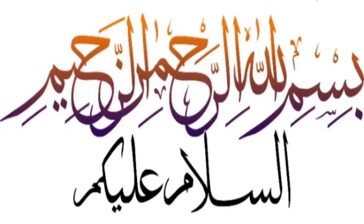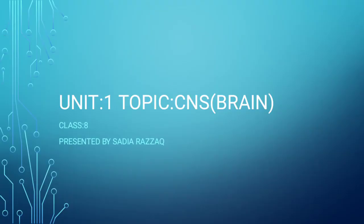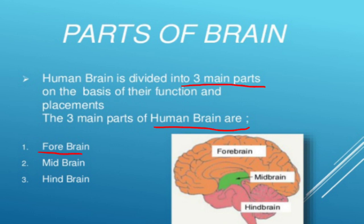Bismillah ar-Rahman ar-Rahim. Assalamu alaikum 8th class. It's your science lecture, and our topic is Central Nervous System Brain. First of all, we will discuss the parts of the brain. Human brain is divided into three main parts: forebrain, midbrain, and hindbrain.